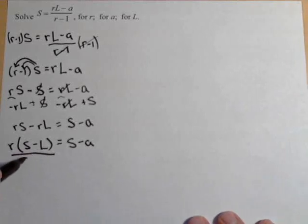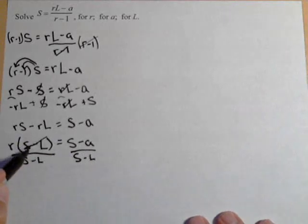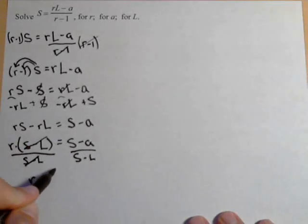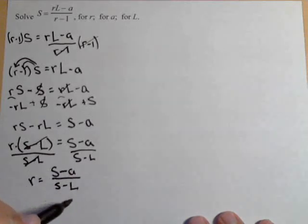Last step, divide by S minus L on both sides. Those do cancel because we have a product. So R equals S minus A over S minus L.